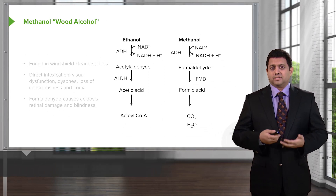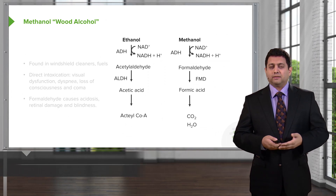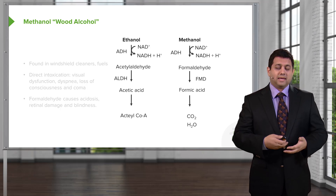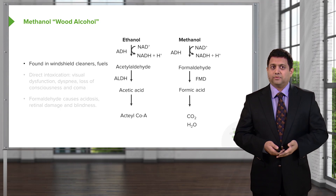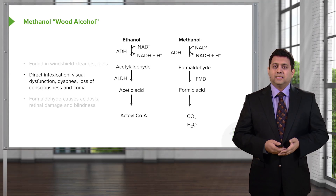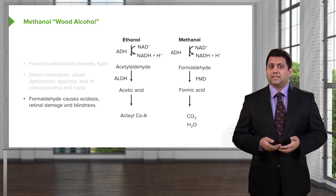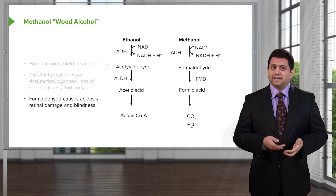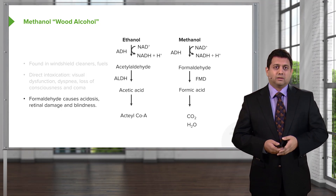Wood alcohol, or methanol, is another form of alcohol that causes a lot of poisoning, particularly in people who are moonshiners making ethanol improperly. It is also found in windshield cleaners and in some fuels. It causes direct intoxication, but one of the problems with methanol intoxication is that the breakdown products are very, very toxic. Formaldehyde causes an acidosis, causes eye damage or retinal damage, and it can cause blindness. This is why we talk about wood alcohol blindness.